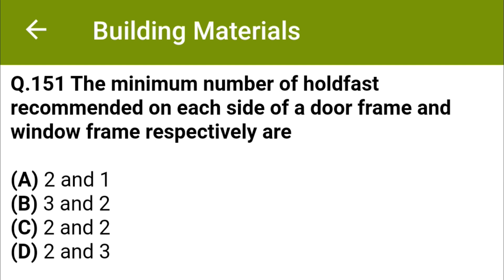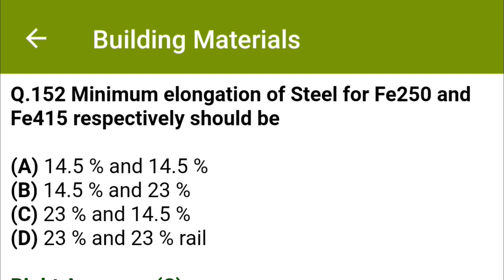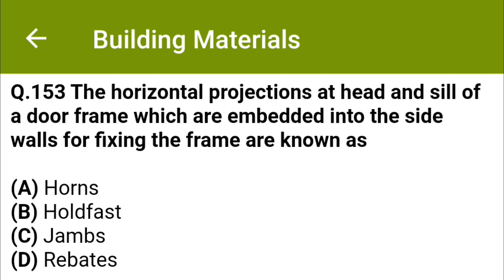Minimum elongation of steel for Fe 250 and Fe 450 respectively should be: option A 14.5% and 14.5%, option B 14.5% and 23%, option C 23% and 14.5%, option D 23% and 23%. The correct answer is option C: 23% and 14.5%.